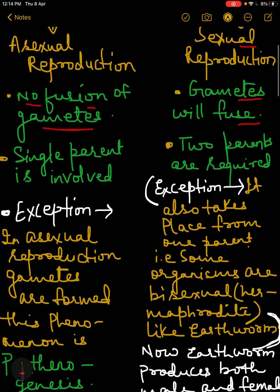Second point: only a single parent is involved in asexual reproduction, whereas two parents are required in sexual reproduction. Normally, sexual reproduction will take place only when there are two parents — one should be the male and the other one is the female.